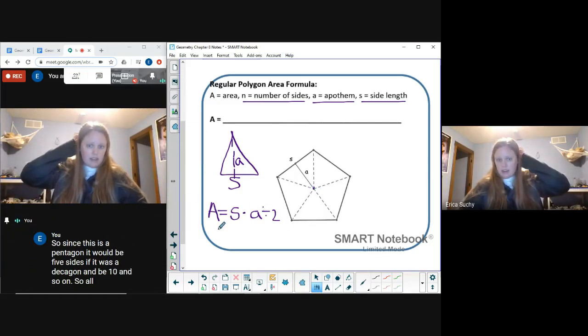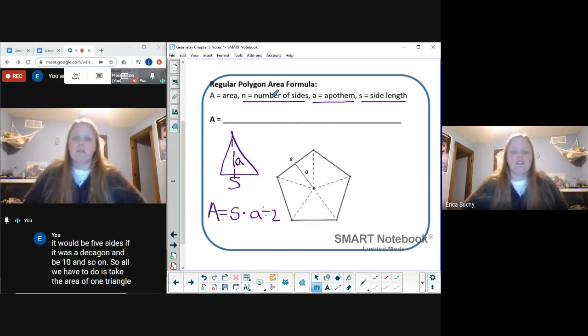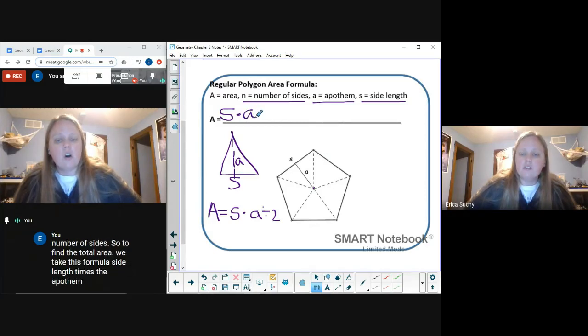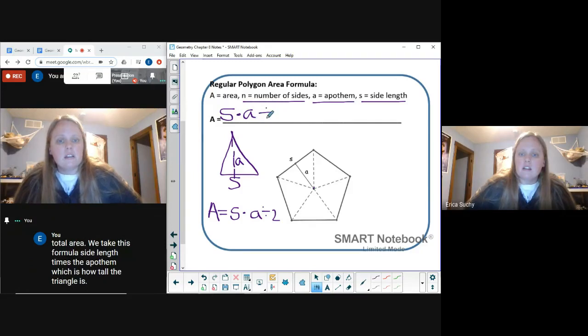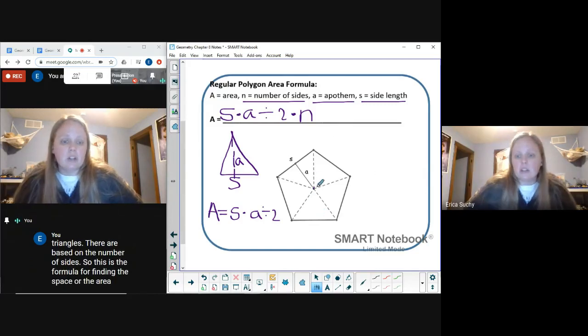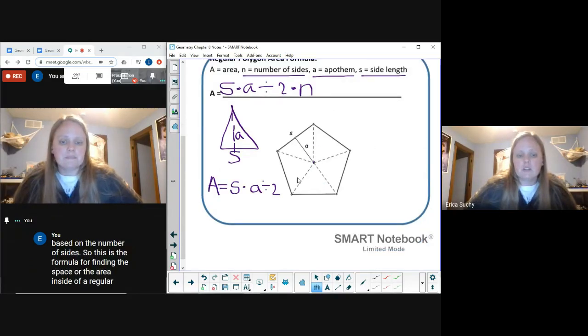Since this is a pentagon, it would be five sides. If it was a decagon, it'd be ten, and so on. So all we have to do is take the area of one triangle and multiply by the number of sides. To find the total area, we take this formula: side length times the apothem, which is how tall the triangle is, divided by two, and then I multiply by the number of triangles there are based on the number of sides.